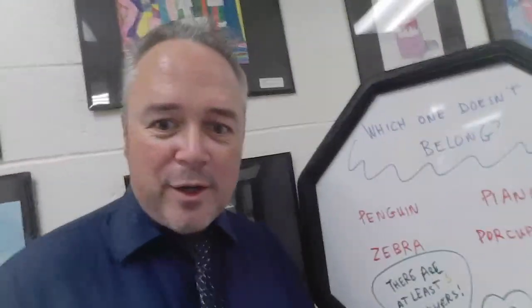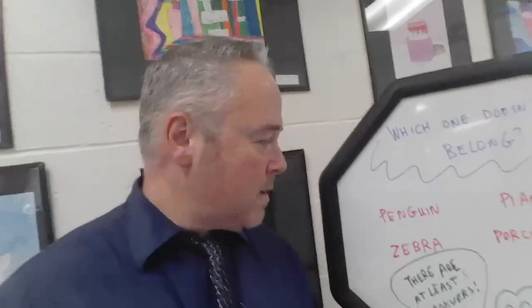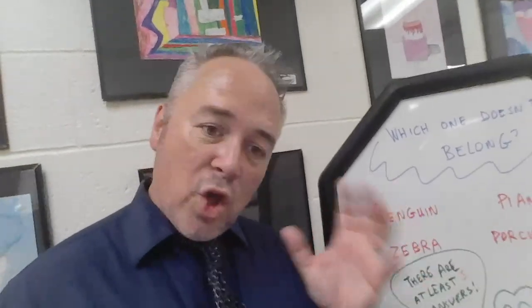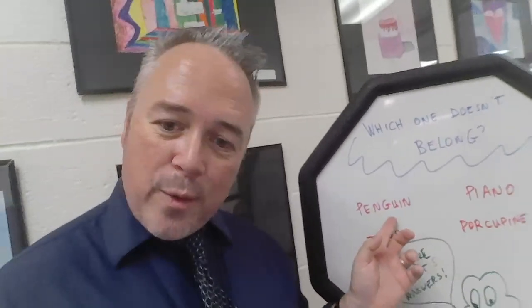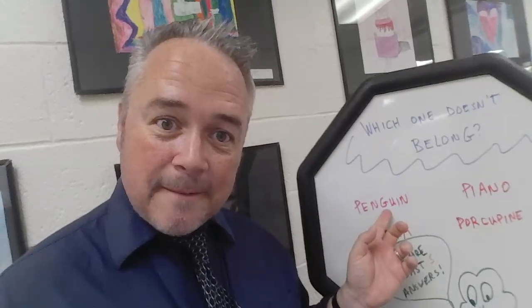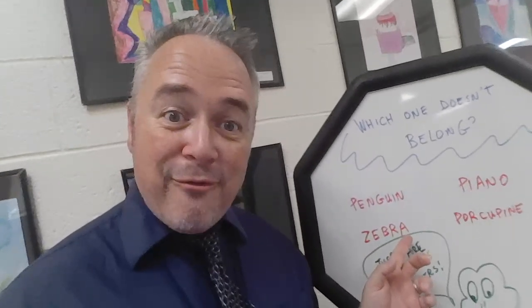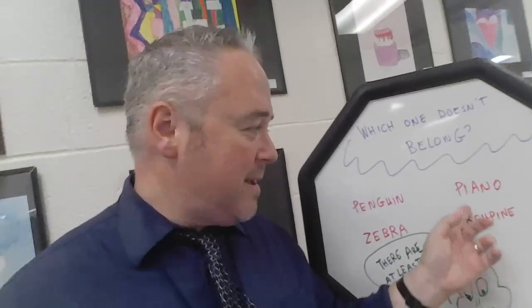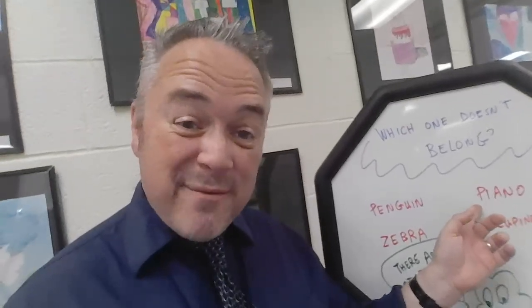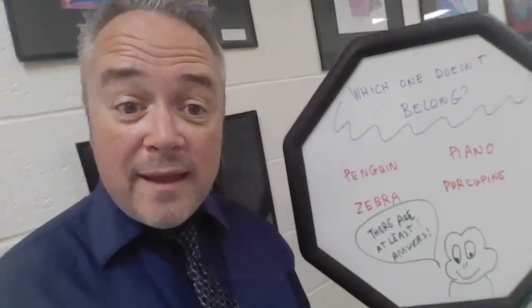Let's try one more thing — this is one that a student told me, I didn't even think of this one. It's also about what things look like. He said that a penguin has two legs. Does a zebra have two legs? No, it has four. A porcupine has four legs and a piano has four legs — even though it's not alive, it has four legs. So penguin doesn't belong because it doesn't have four legs.